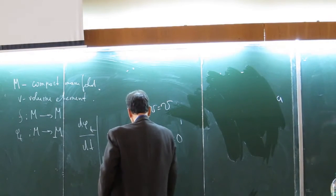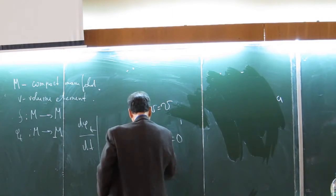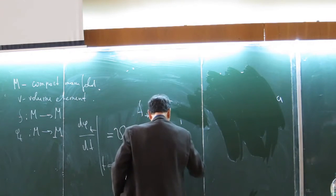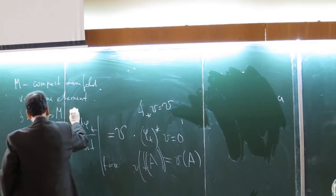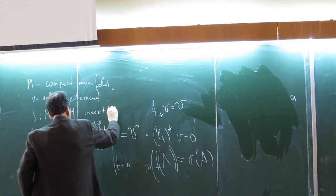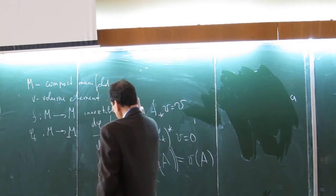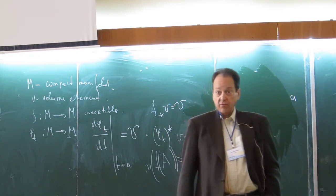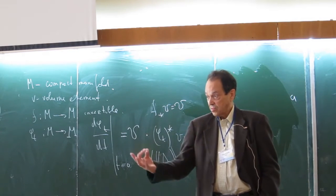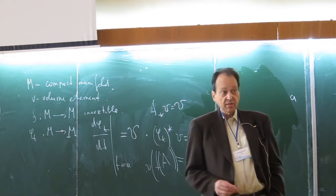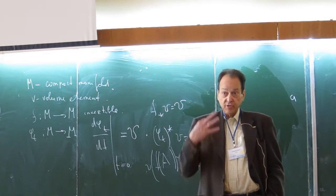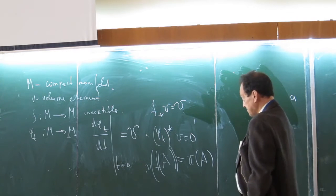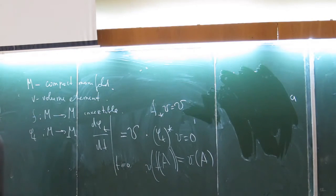The preservation means that if you take a nice set A, the volume of the image is the same. I forgot to say that I assume that the volume is normalized to one. This is what's sometimes considered classical setting, and of course the setting is motivated first of all by classical mechanics, where you have Hamiltonian flow. And the Hamiltonian flow, due to the Liouville theorem, preserves the phase volume. So that's a classical setting. It covers lots of other things.